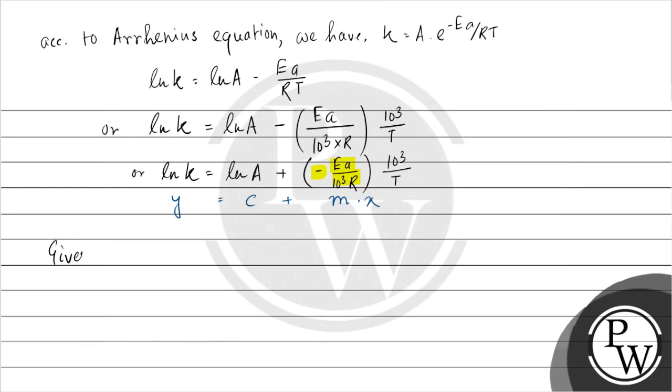Given minus Ea by 10 to the power 3 R is equal to minus 18.5, and R value is 8.31 joule per mole Kelvin. Converting to kilojoules, this gives 154 kilojoule per mole.